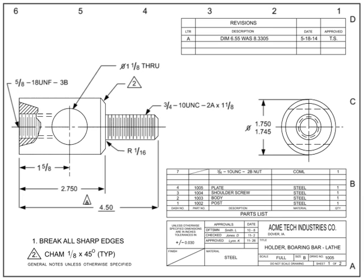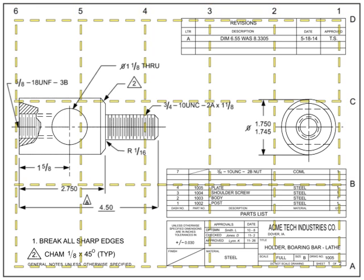Most drawings are broken out into zones using a simple alphanumeric grid. This grid is critical for large, complex drawings when discussing changes or details. The grid helps drafters and engineers pinpoint where information is located.